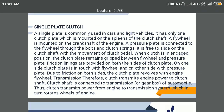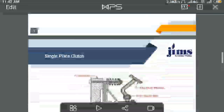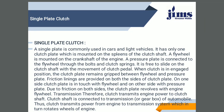A single-plate clutch is commonly used in cars and light vehicles. It has only one clutch plate, which is mounted on the spline of the clutch shaft. A flywheel, as seen at the top of the diagram, is mounted on the crankshaft of the engine. A pressure plate is connected to the flywheel through the bolt and clutch spring, and it is free to slide on the clutch shaft with the movement of the clutch.